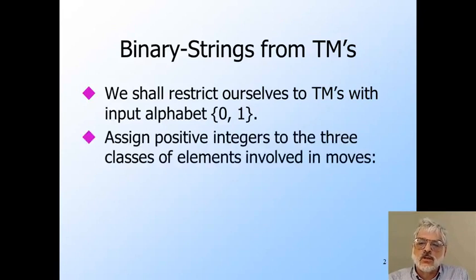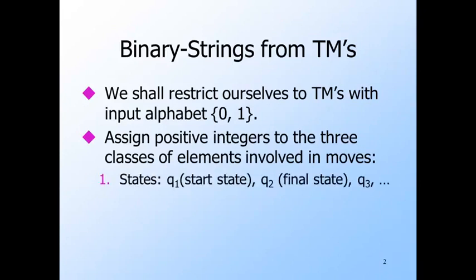The first thing we need to do is to assign integer codes to the components of a Turing machine. We give integers 1, 2, 3, and so on to the states. We'll assume that q1 is always the start state, and q2 is always the one final state of the Turing machine. Once a Turing machine enters a final state, nothing further matters, so we can always merge all final states into one. Thus we can restrict our attention to Turing machines with a single final state, and know that we can still define any recursively enumerable language. The other states will be numbered 3, 4, and so on.